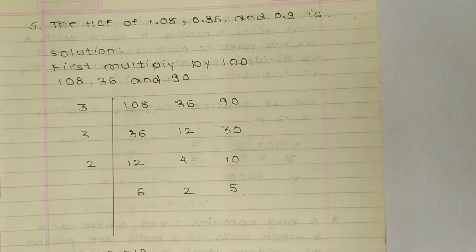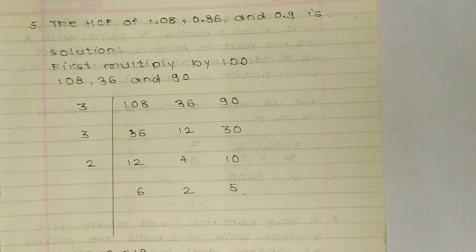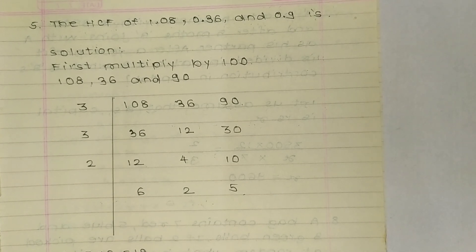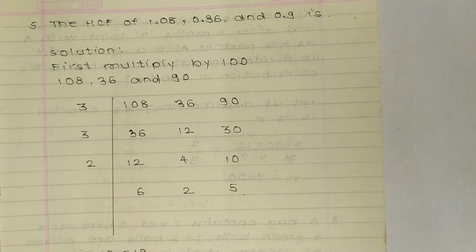Here we are dividing it by 3, so all are divisible by 3. Now 36, 12, and 30 are new figures. These all are also divisible by 3. Now we are getting 12, 4, and 10. Now 12 is divisible by 3, but 4 and 10 are not divisible by 3.